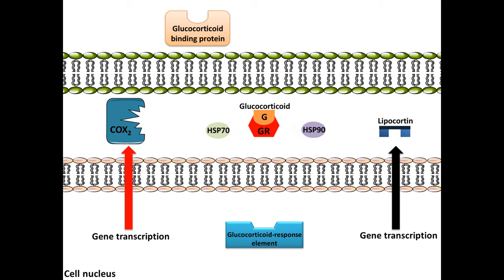This activates the receptor and dissociates the two proteins from the complex, allowing the activated glucocorticoid receptor complex to translocate into the nucleus, where it binds to the glucocorticoid response element. This activates the complex and alters gene transcription.